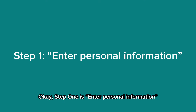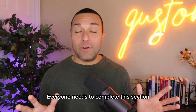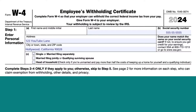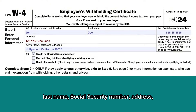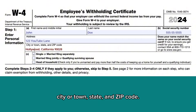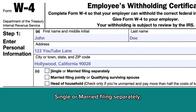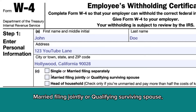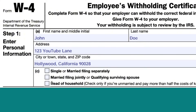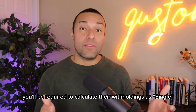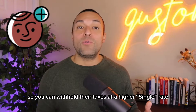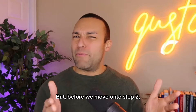Step one is personal information. Everyone needs to complete this section and it's really straightforward. All you need to do is enter your first name, last name, social security number, address, city or town, state, and zip. You'll also have to select one of these options: single or married filing separately, married filing jointly or qualifying surviving spouse, and head of household. If an employee does not fill out the form, as an employer you'll be required to calculate their withholdings as single, so you can withhold their taxes at a higher single rate. And that's it for step one.